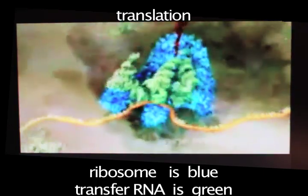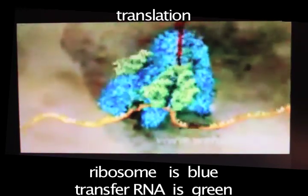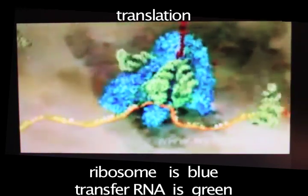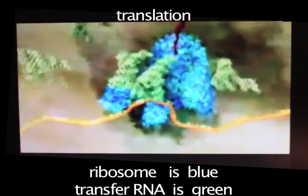The stem loop is the primary structure of RNA, much the way the alpha helix is the primary structure of protein. Things that are made out of RNA, of course, include tRNA.